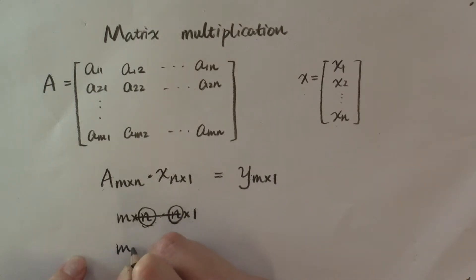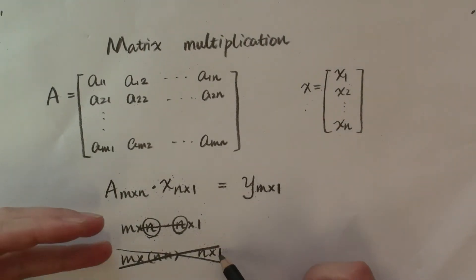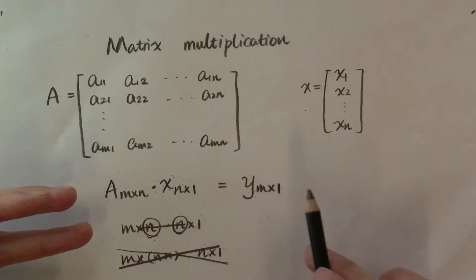So if you have m by n plus 1, you cannot multiply it to a vector of m by 1. That will not work. And the reason why it doesn't work will be obvious once we look at the definition of this product y.